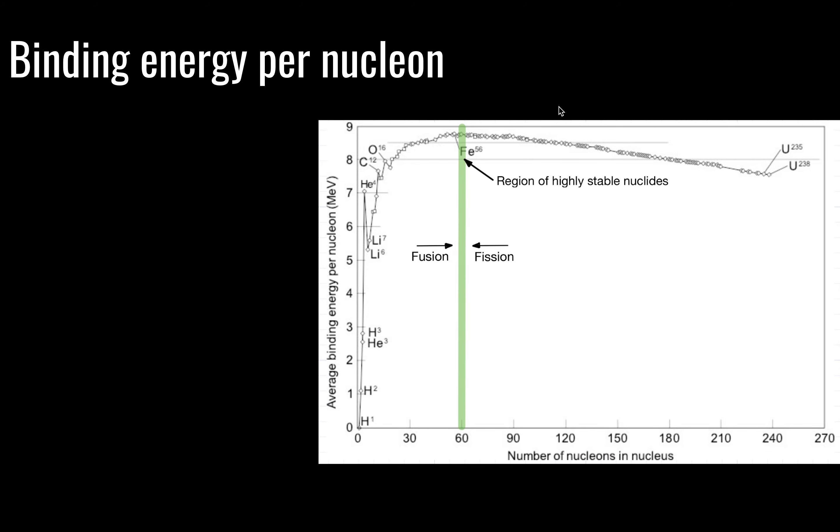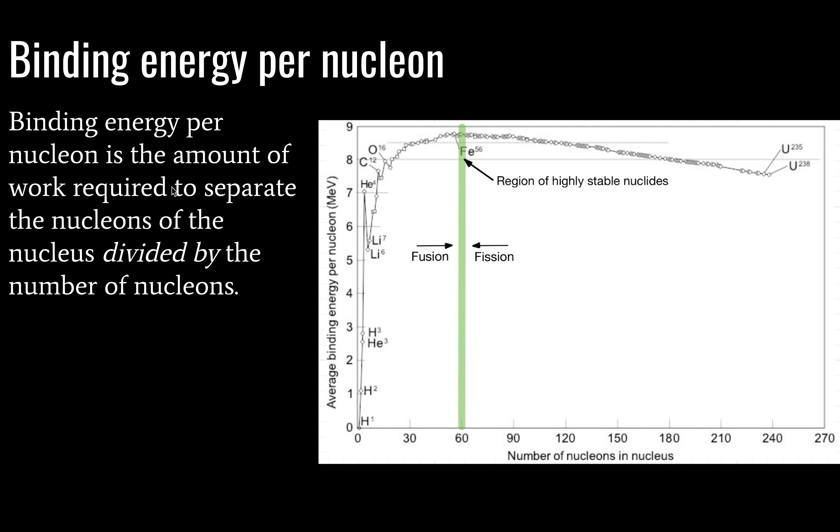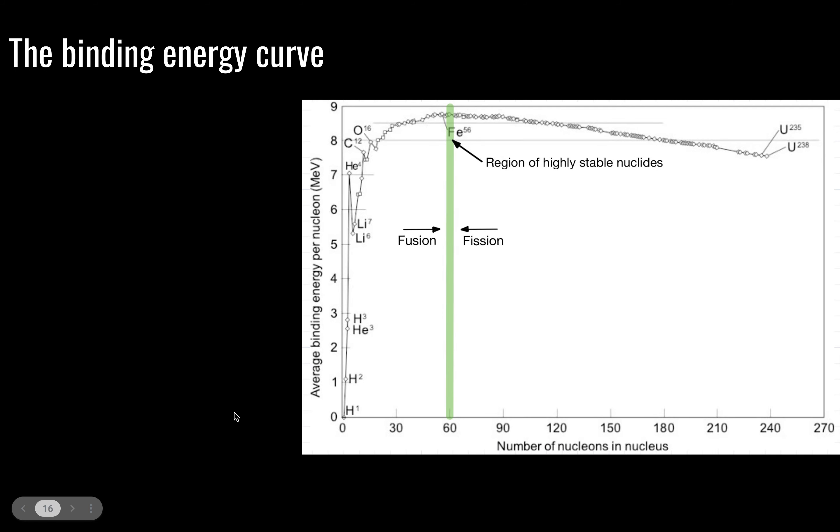Next we're going to look at binding energy per nucleon. This is the amount of work required to separate the nucleons of the nucleus and then divided by the number of nucleons. What we have here is a pretty predictable relationship with one little exception here when we're looking at this particular isotope of helium transitioning to lithium. Chemistry students, you may look a little more deeply into that. We're not going to cover it in IB physics. This is a measure of how stable the nucleus is generally.